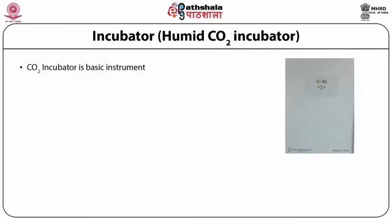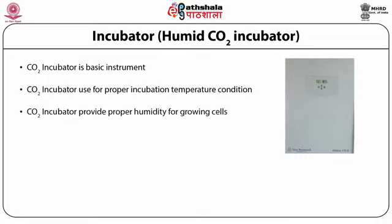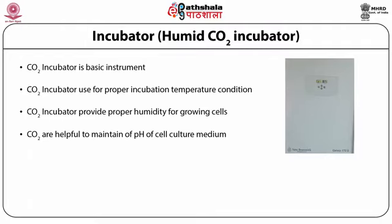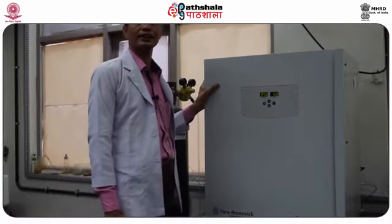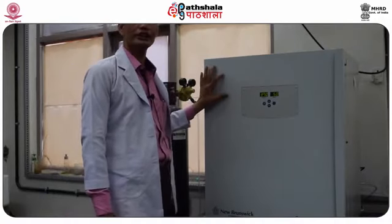The CO2 incubator provides proper humidity for growing cells and also maintains the pH of the cell culture medium, because CO2 diffuses into the medium and acts as a buffer to prevent pH changes. This is one of the basic pieces of equipment required for animal cell culture technology, known as the CO2 incubator, and it performs three functions: incubation of cells, provision of 5% carbon dioxide to maintain pH, and provision of humidity as per cell requirements.